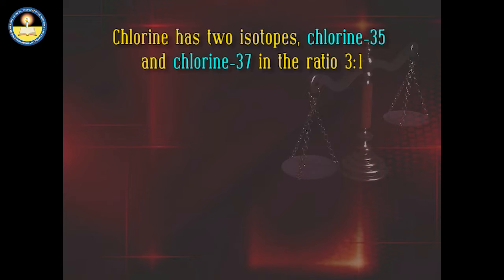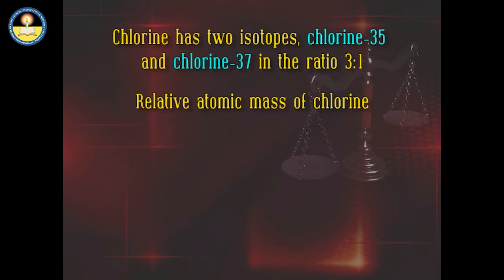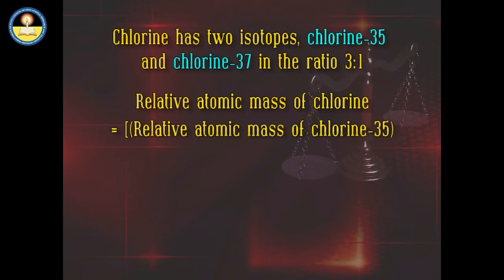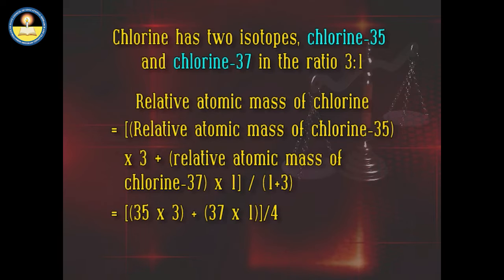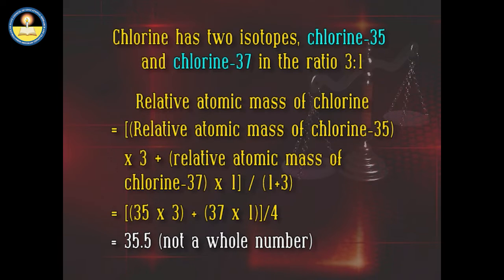Chlorine has two isotopes — Chlorine-35 and Chlorine-37 — in the ratio of 3:1. Relative Atomic Mass of Chlorine equals (35 × 3 + 37 × 1) ÷ (3 + 1), which equals (105 + 37) ÷ 4, which equals 35.5. This is not a whole number.